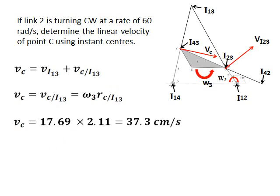We can use the relative velocity formula to find the velocity at point C. The velocity at C equals the velocity at I13 plus the velocity of C with respect to I13. The velocity of I13 is zero because it is theoretically fixed to the frame. Using the basic formula, the velocity at C becomes the angular velocity of link 3 multiplied by the distance between C and I13. Body 3 rotates around I13 in an anti-clockwise motion, and since C is on body 3, the velocity is heading towards the right of the page and is perpendicular to the line formed between C and I13. The velocity at C equals 17.69 multiplied by 2.11, which equals 37.3 centimeters a second.